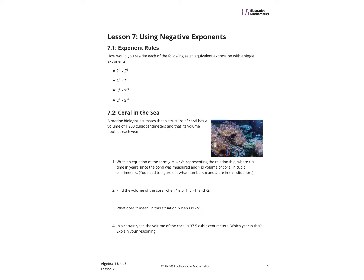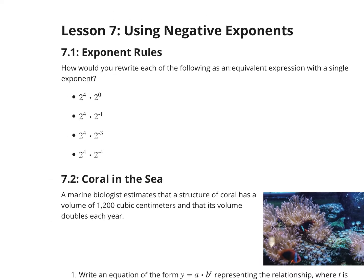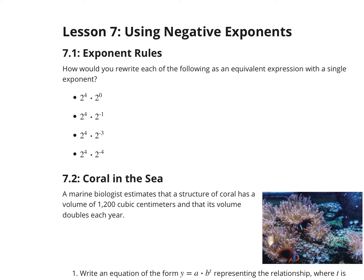We will be continuing to look at exponential decay problems, but now we're adding in this idea of negative exponents. Let's take a look at the first activity. It asks: how would you rewrite each of the following as an equivalent expression with a single exponent? A couple lessons ago, we looked at the idea that when you multiply numbers with the same base, you can just add the exponents together to get a single term.